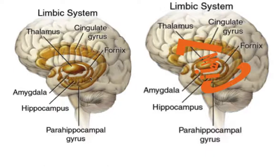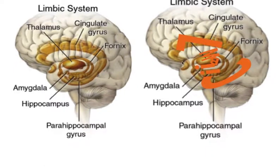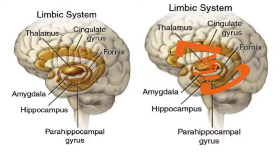The constituents of the limbic system include the amygdala, which has a close relationship to the hippocampus. You have the parahippocampal gyrus, which curves around to form the cingulate gyrus. Then you have the thalamus and the fornix. What we're going to do is make each letter of the word 'LIMBIC' represent a portion of the limbic system.